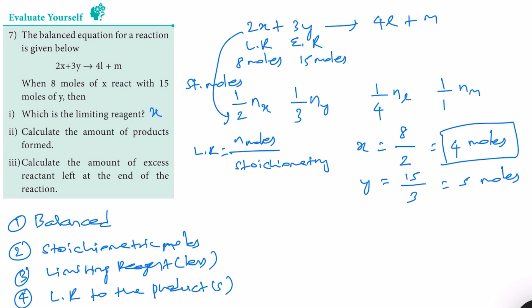We found the limiting reagent — it is X. Now let's calculate the amount of products formed. We compare the limiting reagent to each product. For product L: one-half times N_X equals one-fourth times N_L. Substituting N_X = 8, we get one-half times 8 equals one-fourth times N_L.